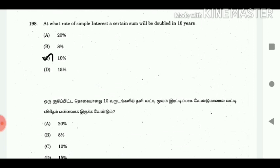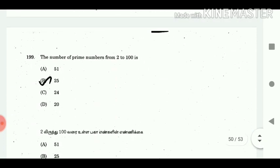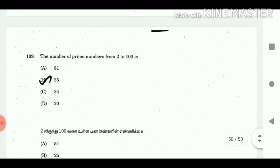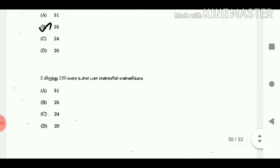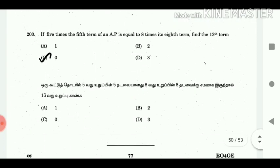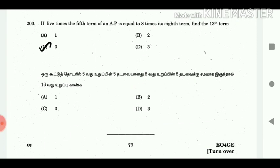Question 197: Find the rate of interest per year for Amount Rs. 2000, Period 2 years, Simple Interest Rs. 120. Answer: 3%. Question 198: At what rate of simple interest will a certain sum be doubled in 10 years? Answer: 10%. Question 199: The number of prime numbers from 2 to 100 is? Answer: 25. Question 200: If 5 times the 5th term of an AP is equal to 8 times its 8th term, find the 13th term. Answer: 0.